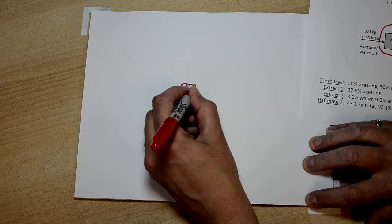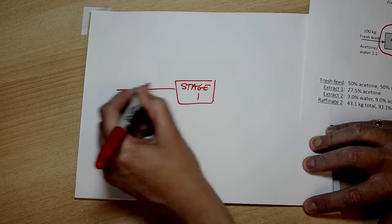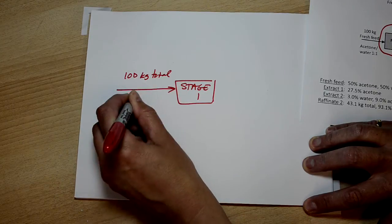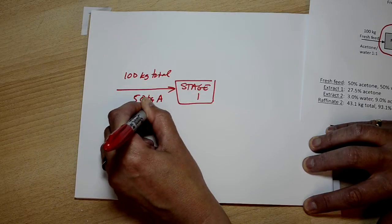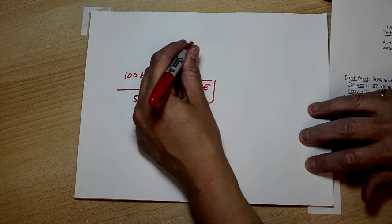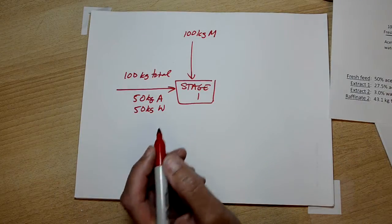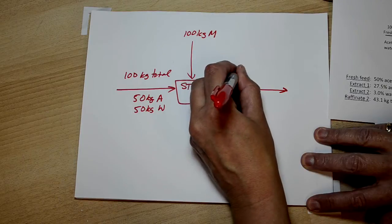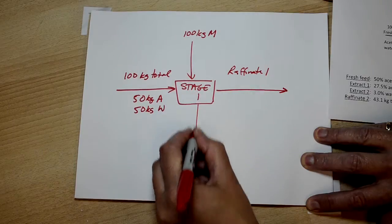So we're going to call this stage one, and in comes the fresh feed, which is 100 kilograms total, which is 50 kilograms acetone and 50 kilograms water. There's 100 kilograms of MIBK coming in here, and we have the raffinate one stream and the extract one stream.